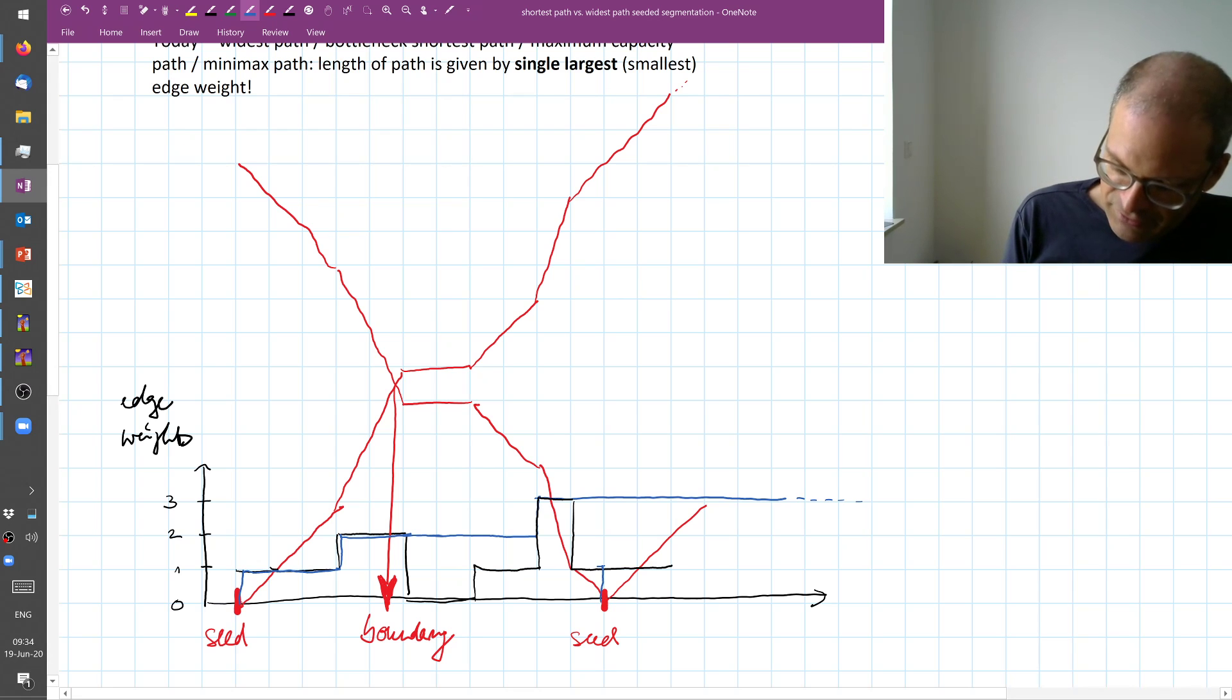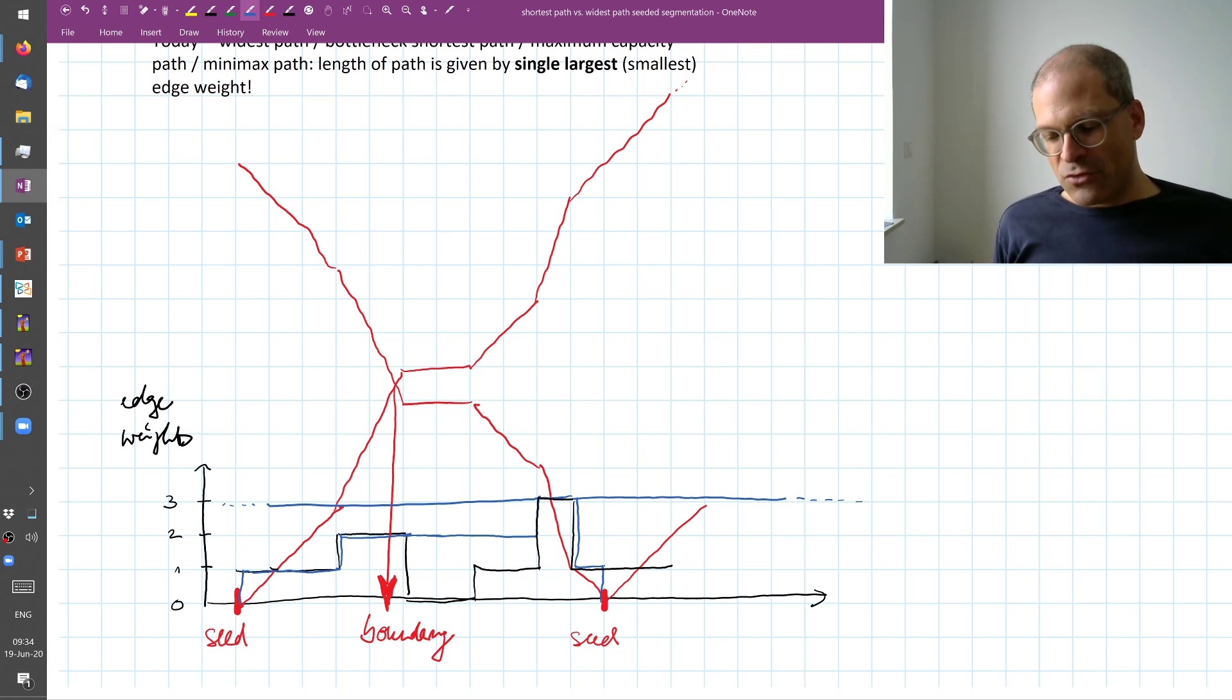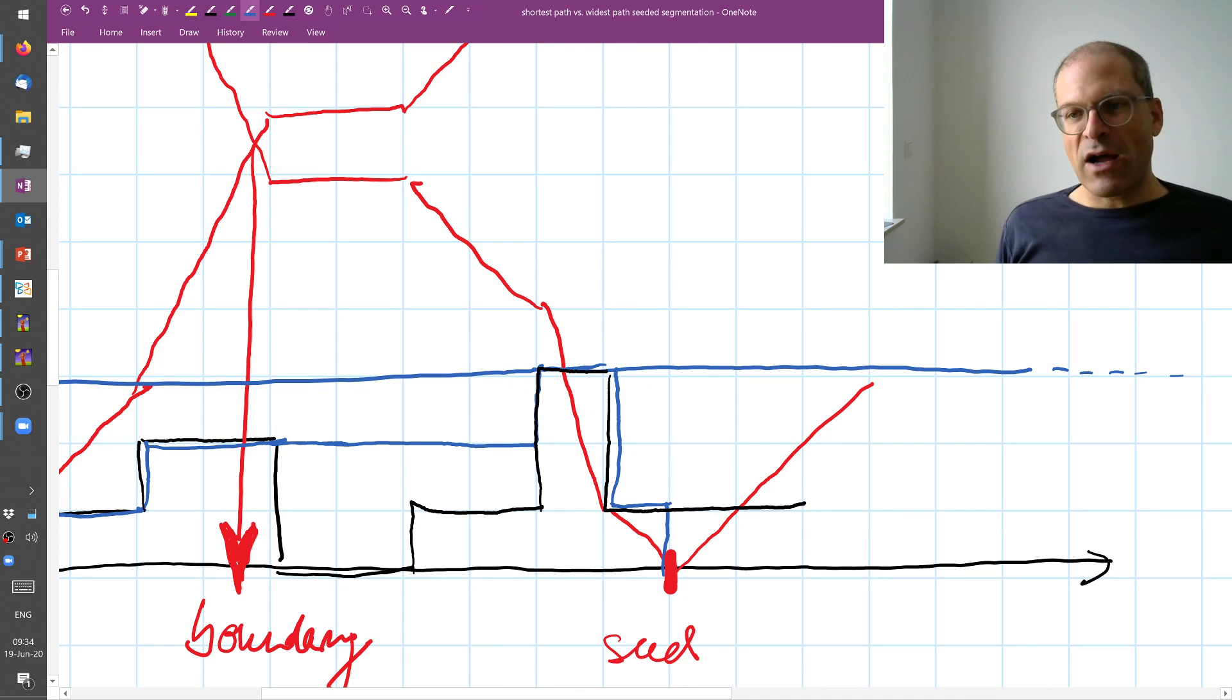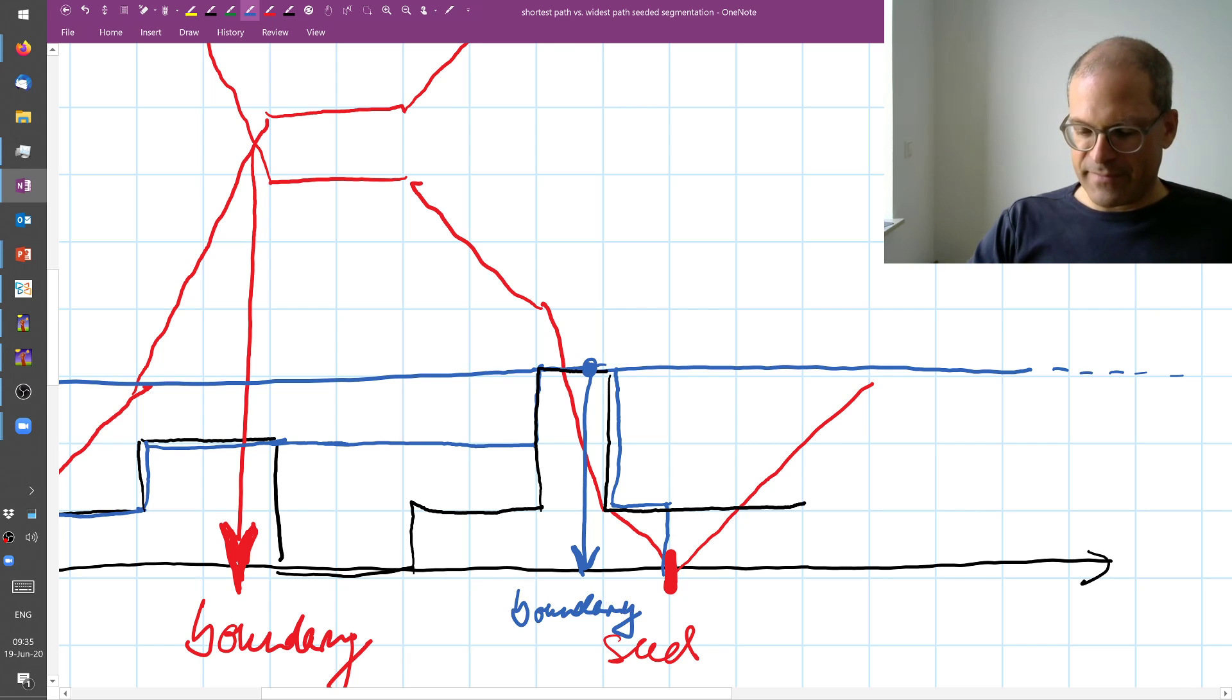We can similarly compute the minimax distance to the right seed. And if we now again look where these two costs are the same, they happen to be the same on this plateau. Now, where on this plateau to cut? According to the minimax path cost is not strictly defined. Let's for now say we either pick a point where the costs are the same arbitrarily, so that means inside this interval here. So I'm arbitrarily taking this point here where the two costs are the same, and I find that this should be my segmentation boundary.